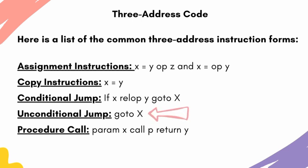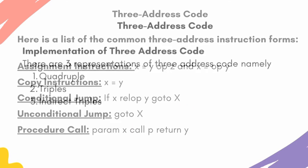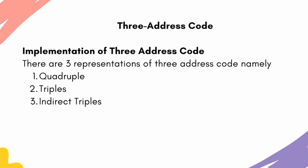Unconditional jump takes the form: go to L, where L is a label, location, or store address. If we have a go-to instruction, we can skip certain statements and transfer control flow to that location.